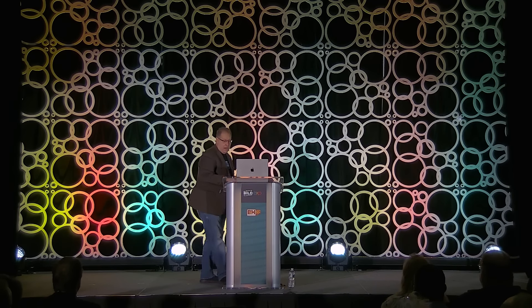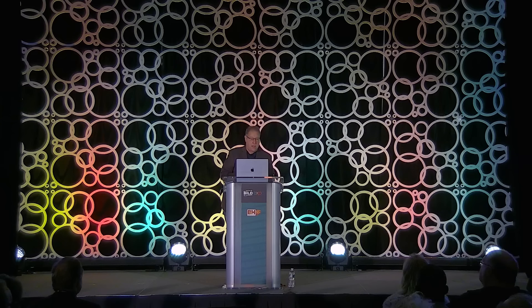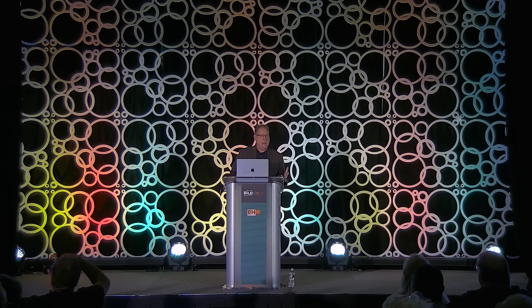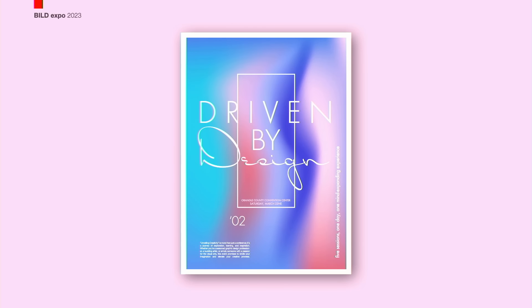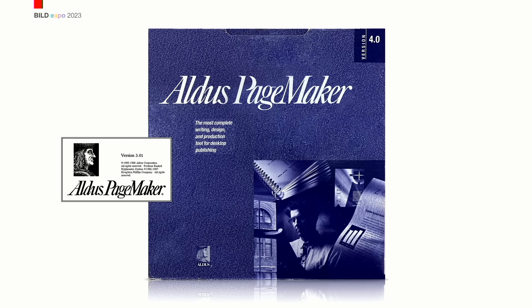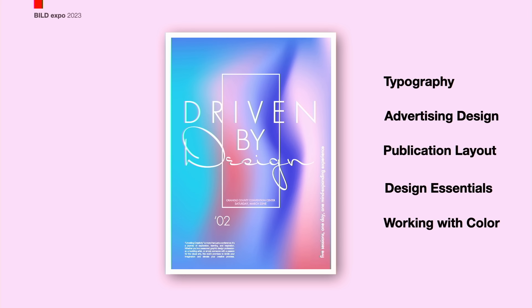Back in those days, the program everybody used for page layout was Aldus PageMaker - Adobe wound up buying them years later. This was before Quark Express and before everybody switched to InDesign. The day was not going to teach PageMaker. Instead it was going to teach typography, advertising design, how to lay out a publication or newsletter, and there was a whole class on how to design an ad that gets results - design essentials, how to work with color.